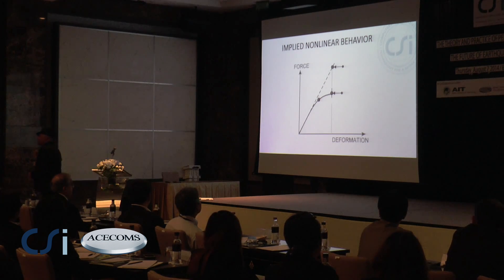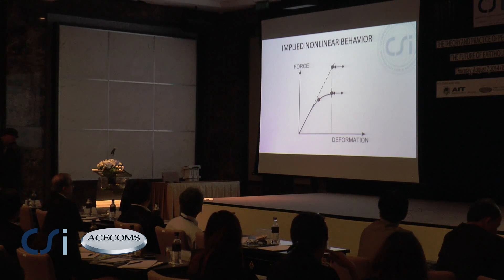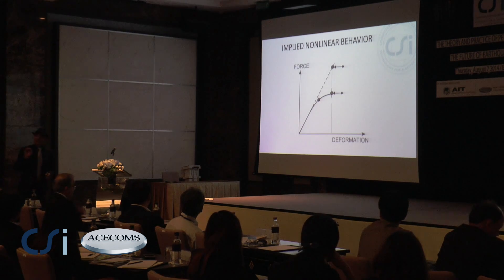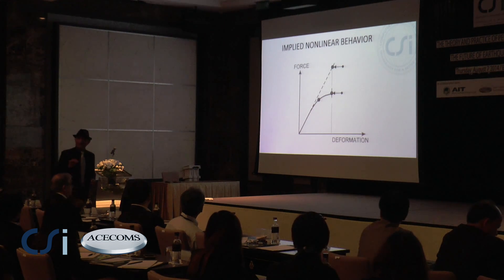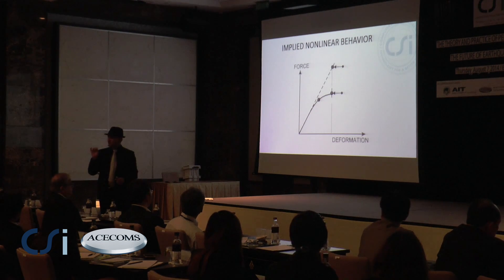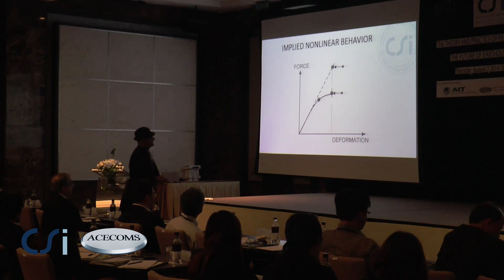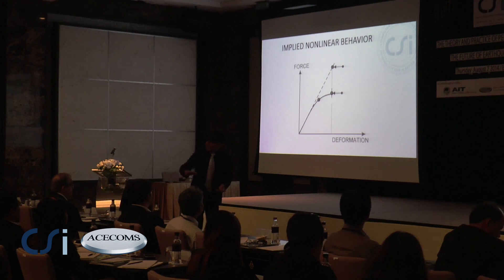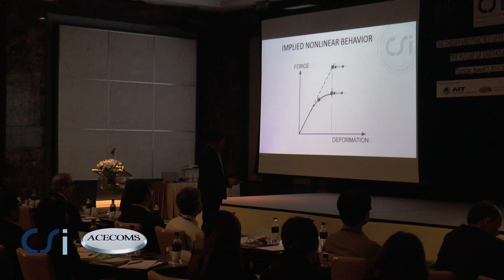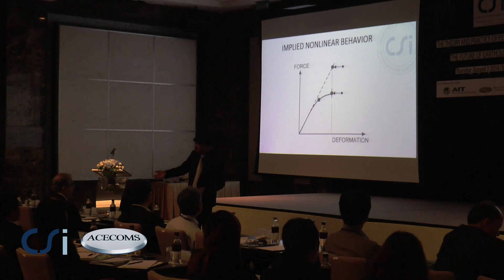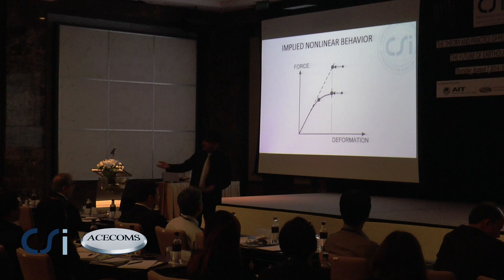Now, if you did the same thing over again, but this time you allow the structure to yield — in other words, you allow the analysis to take into effect the effect of non-linearity — you will find out that when you apply a certain level of earthquake and get the maximum displacement and maximum force, you get a point here. Double the effect of the earthquake, you don't follow up that way; you start going this way. And as you triple the effect of the earthquake, you essentially get a curve that goes like that.